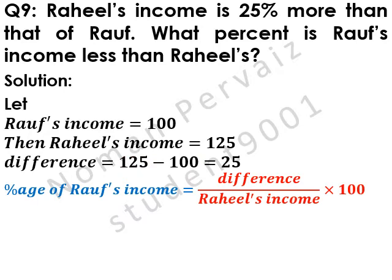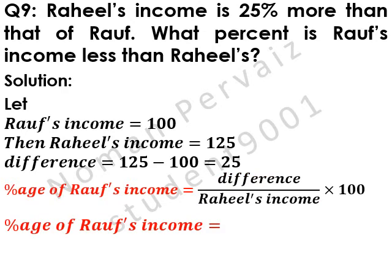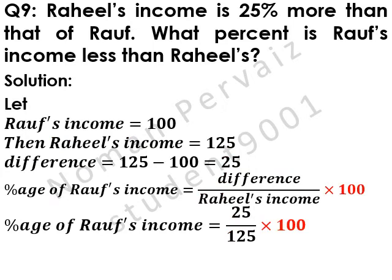The formula is: percentage of Raouf's income is equal to difference divided by Raheel's income, multiplied by 100. So that is 25, which is the difference, divided by 125, which is Raheel's income, multiplied by 100.